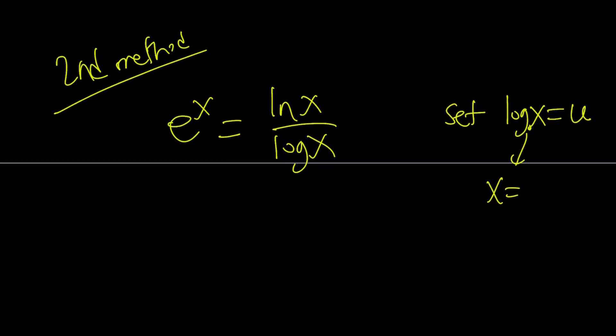So let's go ahead and talk about the second method. The second method involves the following. We have e to the power x equals ln x over log x. Let's go ahead and set log x equal to u. Now, this means x, because the base is 10, by using definition of logs, x becomes 10 to the power u and ln x becomes ln 10 to the power u, which is u ln 10. So ln x is u ln 10 and log x is u.